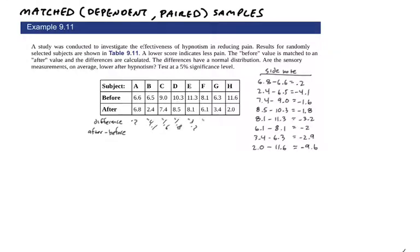Notice what's happening: when the difference is positive, after is larger than before. When it's negative, after was smaller. We keep the sign of the dominant value when subtracting. Whether the difference is positive or negative tells us whether before or after is larger. This is why we relate everything to zero — zero is the gatekeeper indicating whether the number is positive or negative.